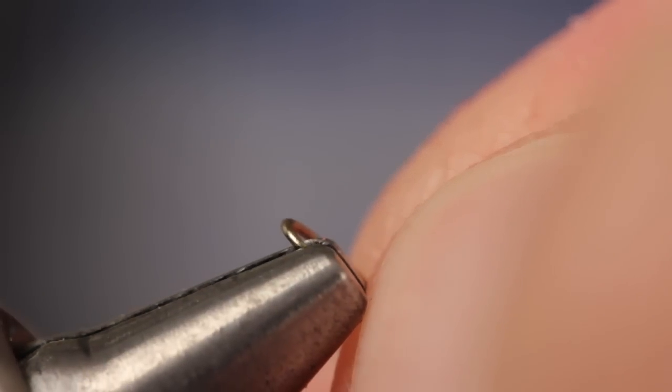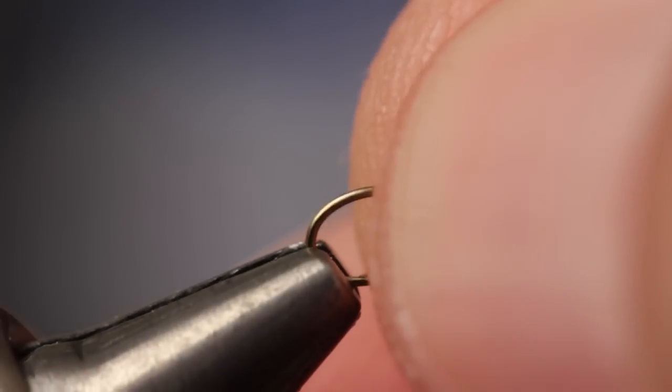Begin by mashing the barb on the hook, as flies this small can be tricky to remove, and get your hook set firmly in the vise.